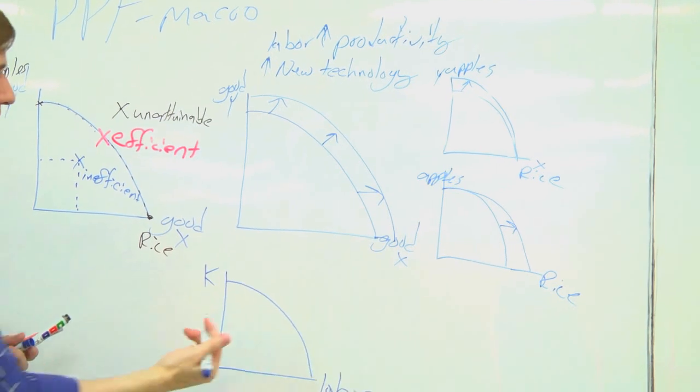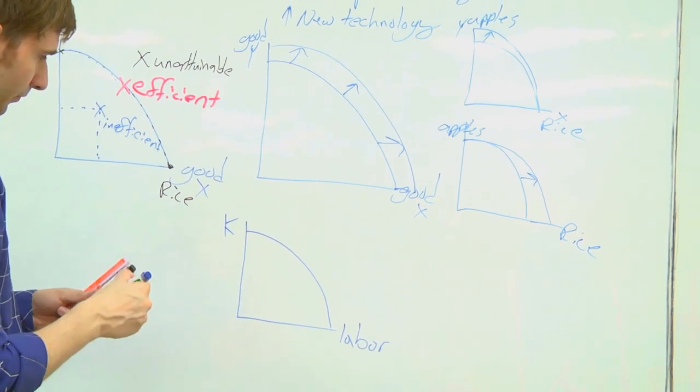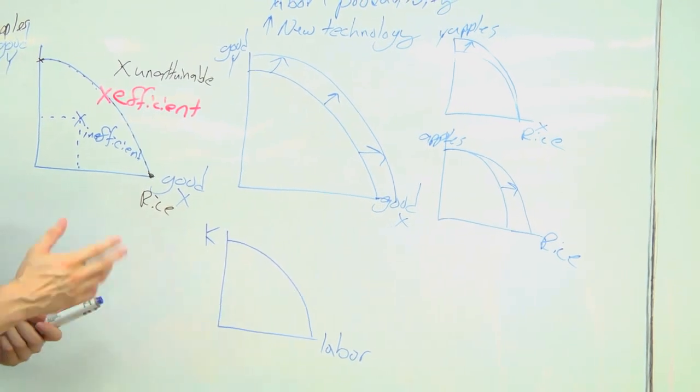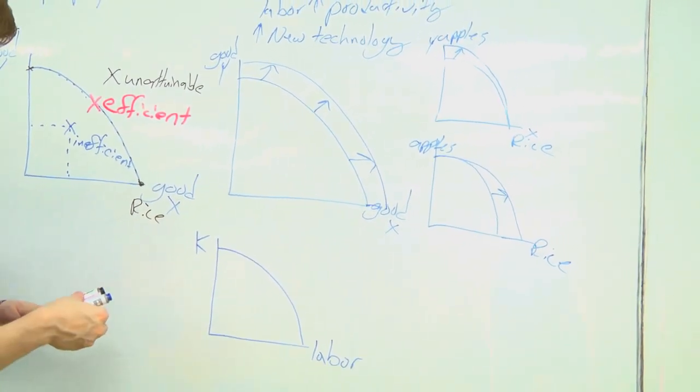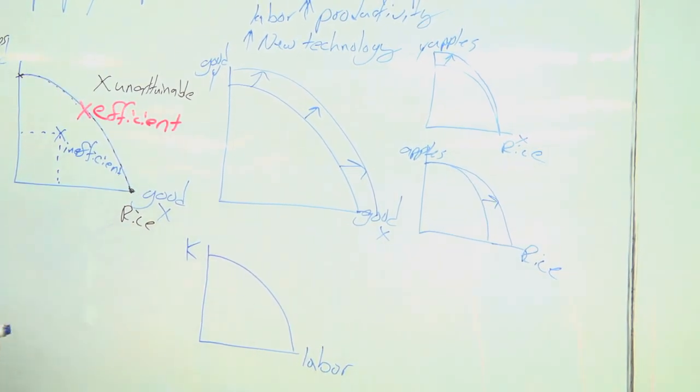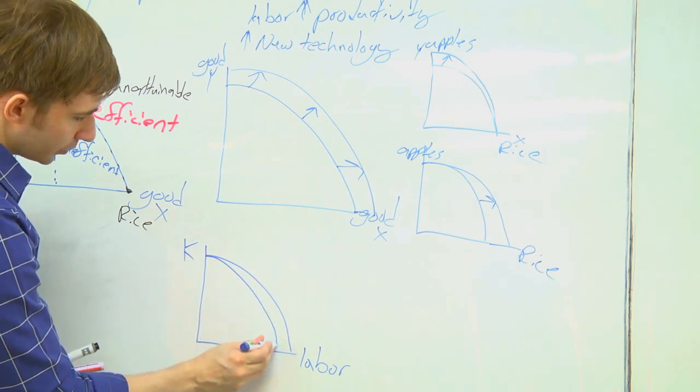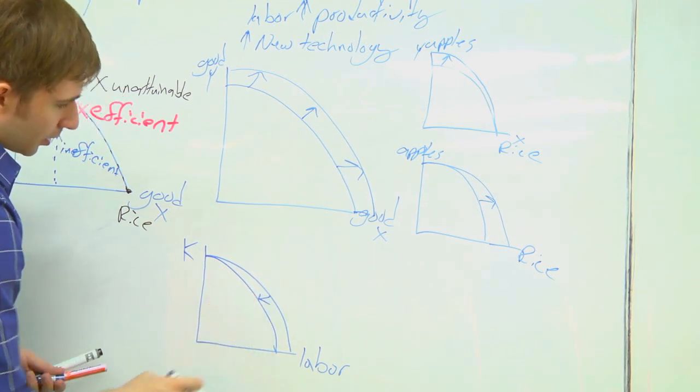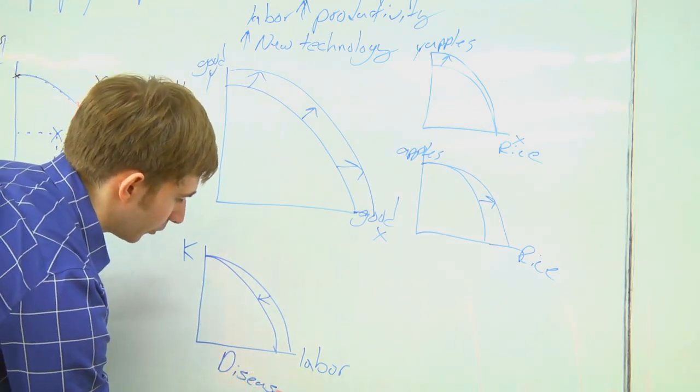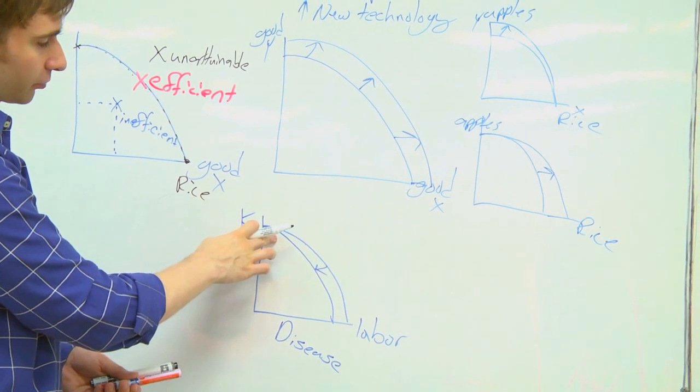We could also have our production possibility frontier come inward. So here now I have K for capital. This would be building machines, investments in business. And labor, this is my population, these are my workers. So I could have some inward movement. So what would cause this? Maybe disease. Disease comes along and kills off some of my working population, but my machines and buildings and factories are still there.